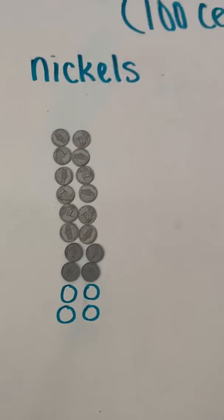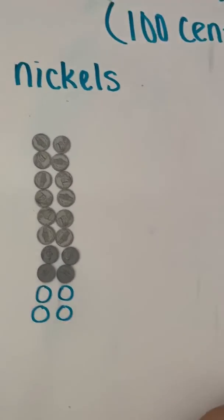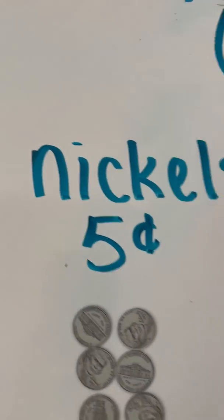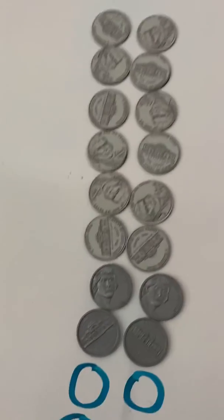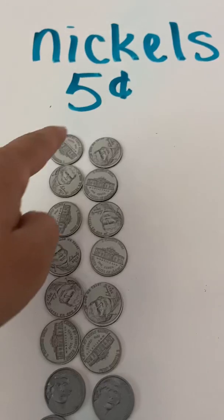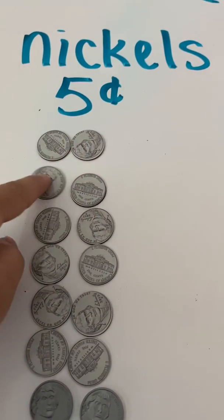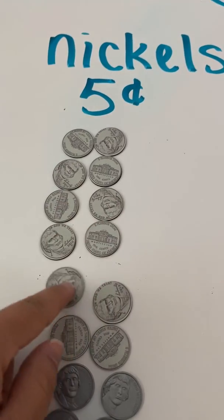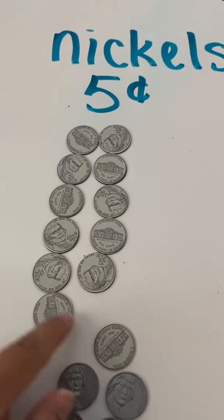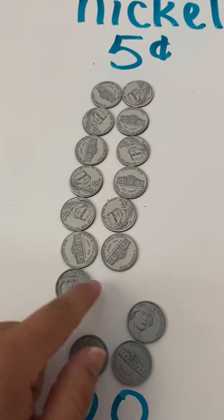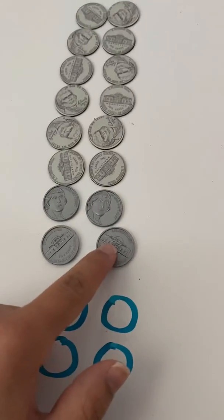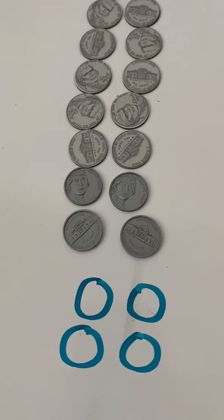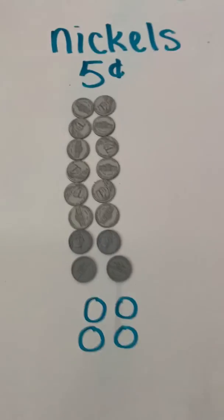Let's go and look at our nickels now. Nickels are worth — I hope you said — five cents. So since nickels are worth five cents, then we need to count by fives. Five, 10, 15, 20, 25, 30, 35, 40, 45, 50, 55, 60, 65, 70, 75, 80, 85, 90, 95, 100. I ran out of nickels to count to 100.